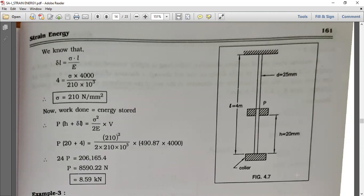Let us simplify from the figure. Here we have figure 4.7 in which the rod is connected to the collar. The collar drops through 20 mm height with total length 4 meters. We know delta L equals sigma L upon E. We have all the values, so putting them in this equation we get sigma equals 210 newton per mm square.